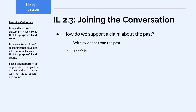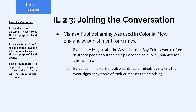How do we support a claim about the past? There's really only one way: we have to use evidence about the past as well. For instance, if I made the claim that public shaming was used in colonial New England as punishment for crimes, the evidence must also be from the past — such as that magistrates in Massachusetts Bay Colony would often sentence people to stand on a pillory and be publicly shamed, or that Puritans made criminals wear signs or symbols of their crimes on their clothing, as we know from reading The Scarlet Letter. Since I've made a claim about the past, I can only support it with evidence about things that happened in the past.